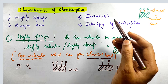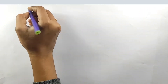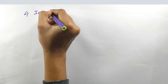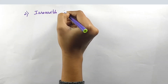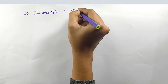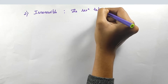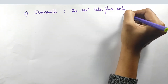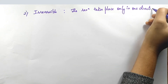Next, let us move on to the second point, that is irreversible nature. Irreversible means the reaction takes place only in one direction. It is called an irreversible process.